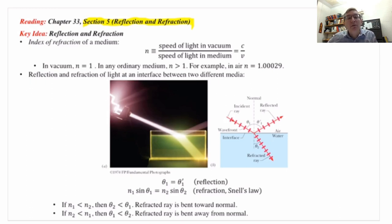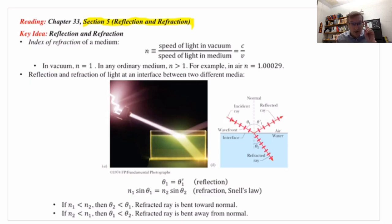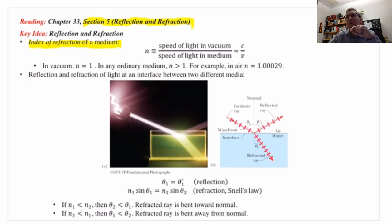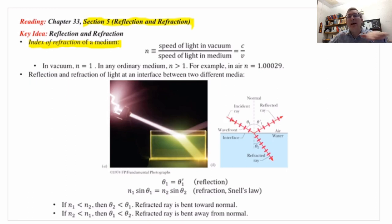The answer is that, in general, for two transparent materials put together with an interface, two distinct things can happen: reflection and refraction. To study refraction specifically, we need to introduce the concept of the index of refraction of a medium. A medium is just another word for a transparent material. We have to talk a bit more about electromagnetic waves traveling in what's called vacuum — complete emptiness, the lack of any atoms whatsoever.